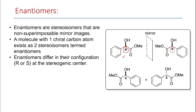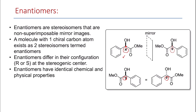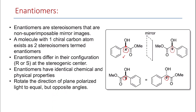These two molecules are both S configuration, so they are the same molecule — they are not different and they are not enantiomers. Enantiomers have identical chemical and physical properties; they only differ in their rotation of plane polarized light. Their rotation of plane polarized light is equal but in opposite directions, and this is the only difference between enantiomers.